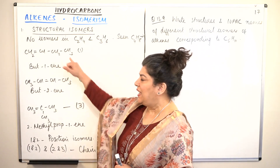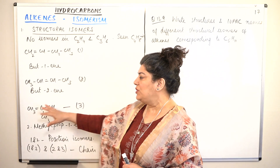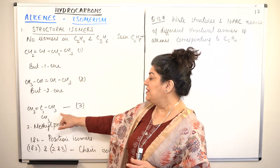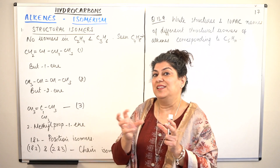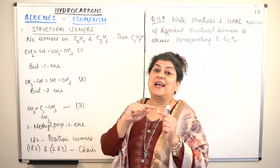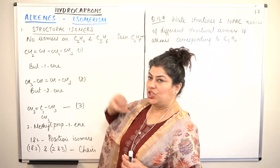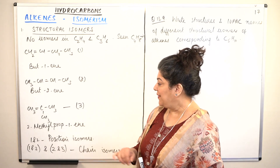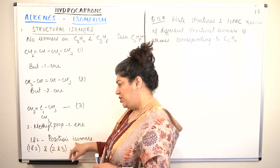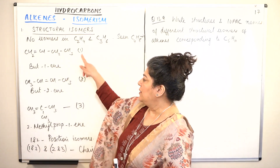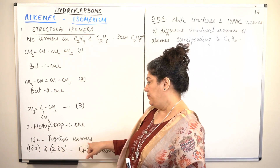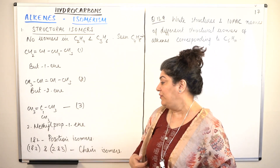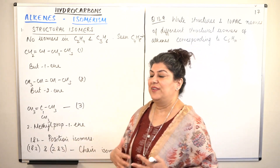Comparing the isomers: but-1-ene and but-2-ene are position isomers, since the position of the double bond differs. But 2-methylprop-1-ene versus either of the but-enes is a chain isomer — the chain itself has changed its shape. So isomers 1 and 2 are position isomers, while isomers 1 and 3, and 2 and 3, are examples of chain isomers.